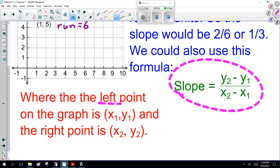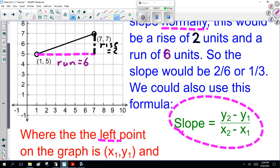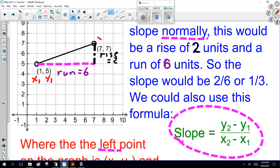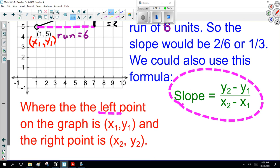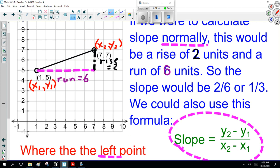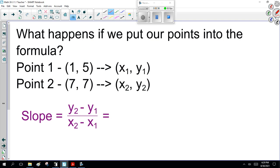Traditionally, the left point on the graph is x1, y1, and the point on the right is x2, y2. If I give you the graph like this, you can just count the rise and the run. If I just give you the points, you want to plug the numbers into the equation because that's the quicker way to do it.